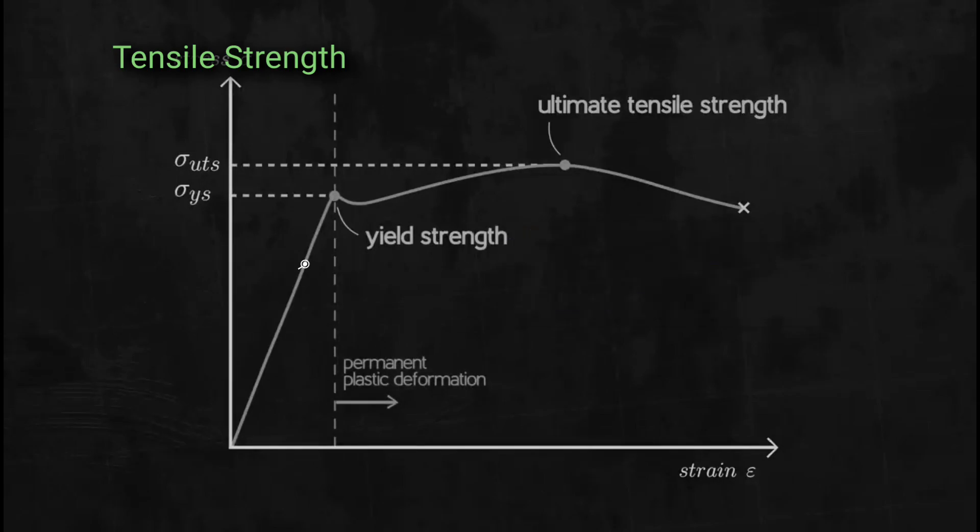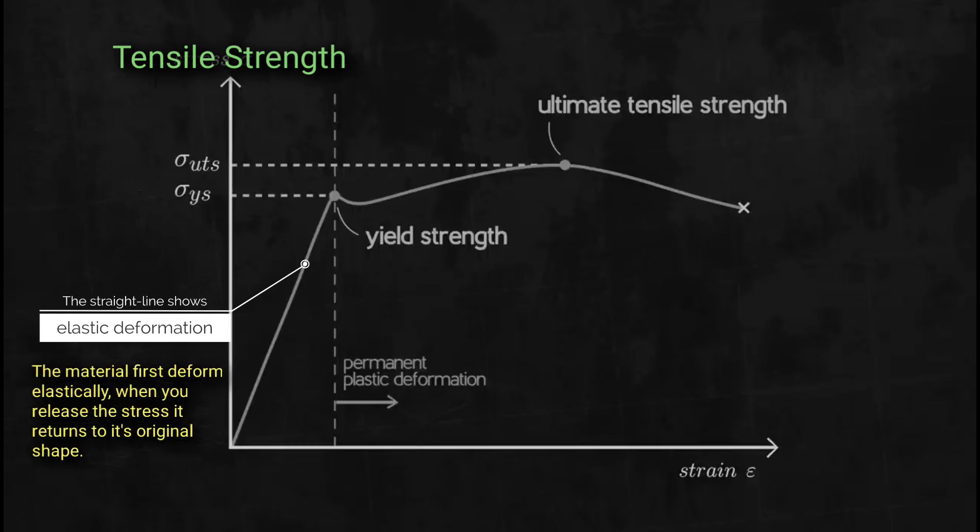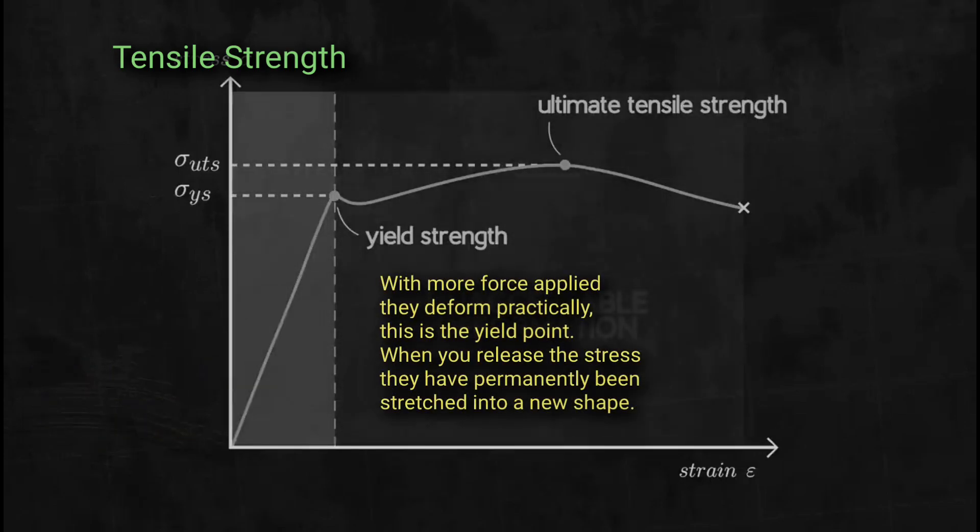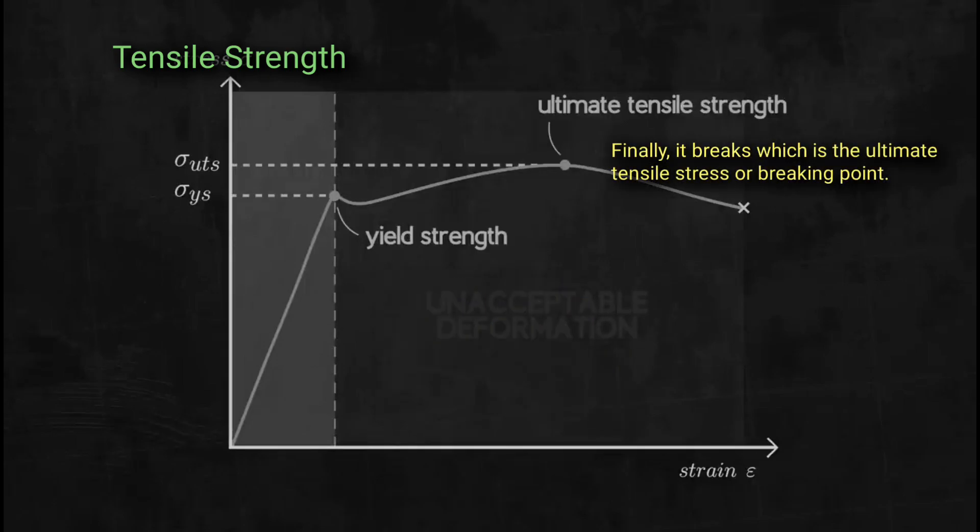In summary, the stress-strain curve shows that the material first deforms elastically. When you release the stress, it returns to its original shape. With more force applied, they deform plastically. This is the yield point. When you release the stress, they have permanently been stretched to a new shape. Finally, it breaks which is the ultimate tensile stress or breaking point.